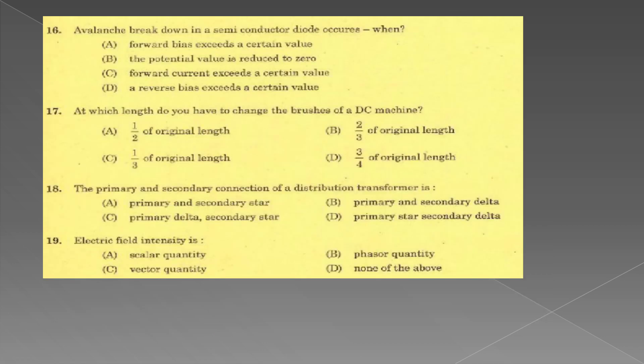Avalanche breakdown in semiconductor diode occurs when reverse bias exceeds a certain value. At which length do you have to change the brushes of a DC machine? 2 by 3rd of the original length. The primary and secondary connection of a distribution transformer is primary delta, secondary star. Electric field intensity is a vector quantity.